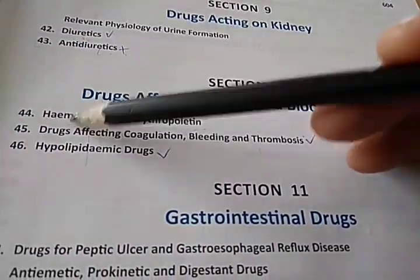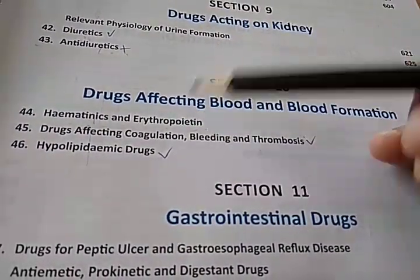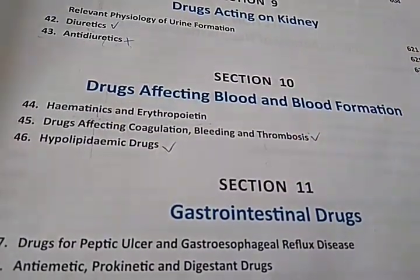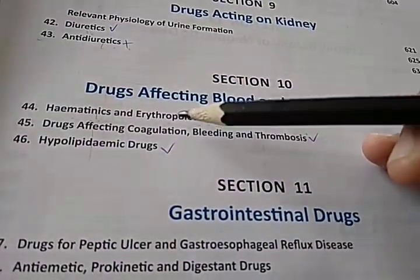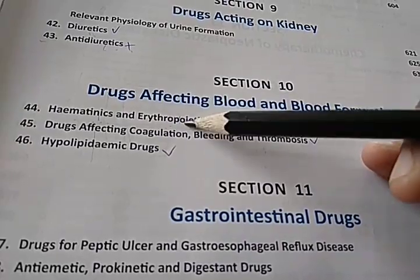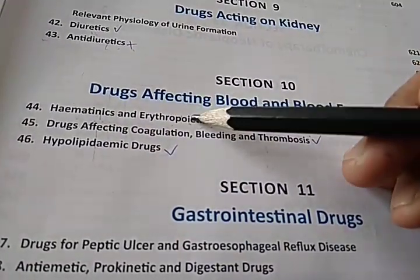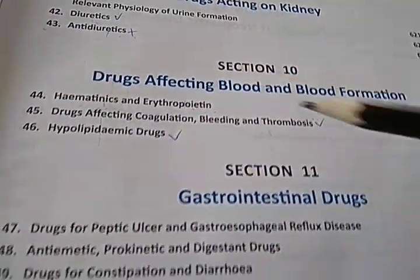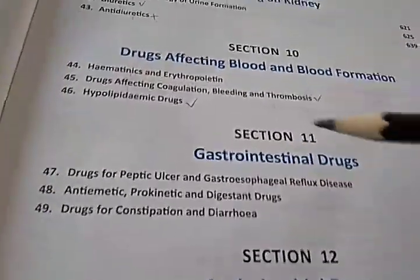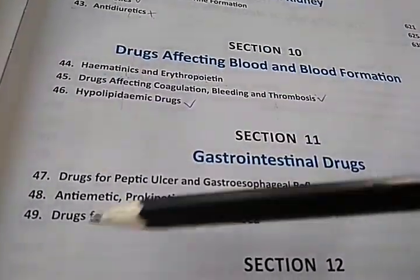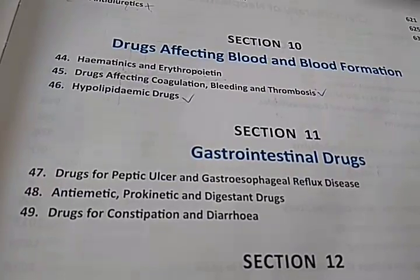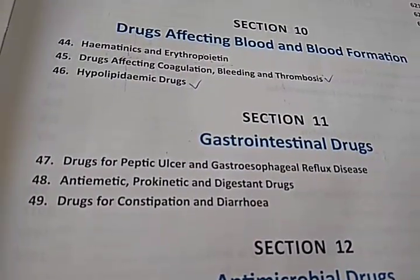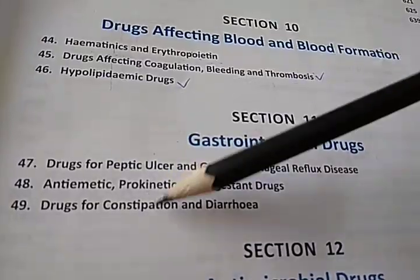For blood and blood formation, you have erythropoietin and hemantinics — that is helping the blood form. Erythropoietin is a hormone from the kidney which will make more red blood cells. Then you have gastrointestinal drugs — for people with ulcers, you will give pantoprazole and all that.